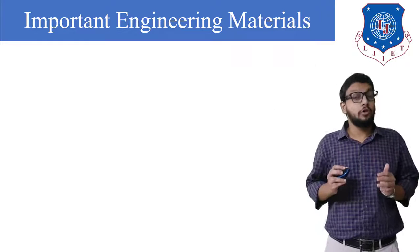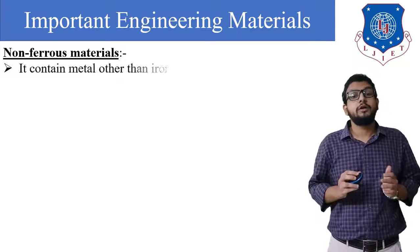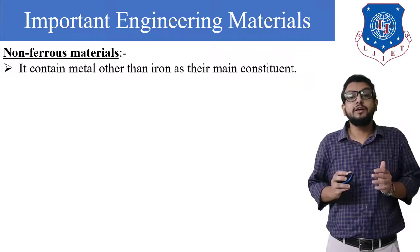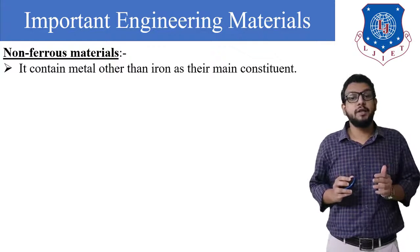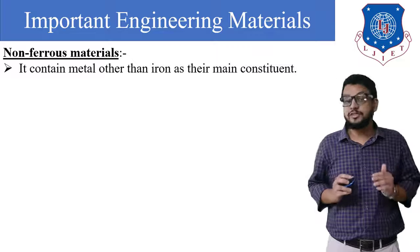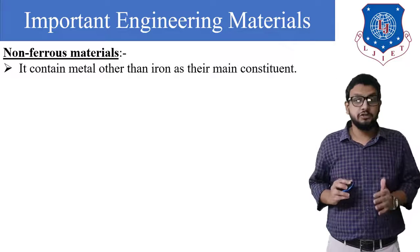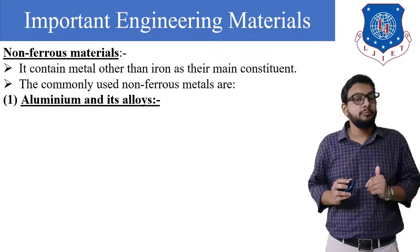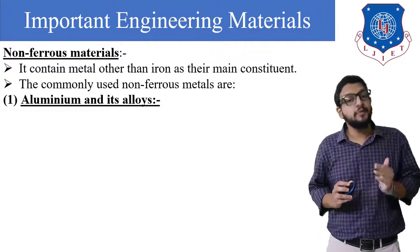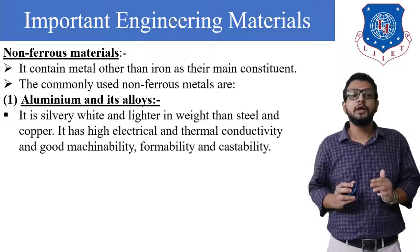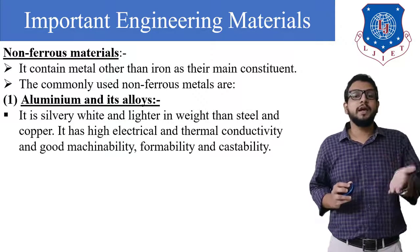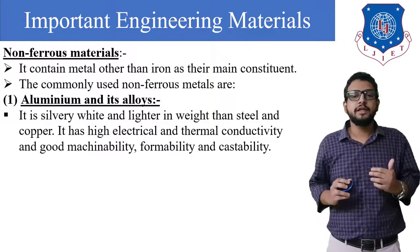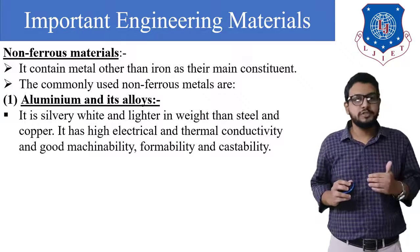Next we need to see non-ferrous metals. Non-ferrous metals contain metals other than iron as the main constituent, as discussed in our last session. The commonly used non-ferrous metals are aluminium and its alloys. Aluminium is a silvery-white metal, lighter in weight than steel and copper.